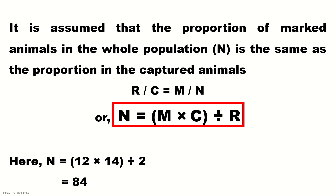It is assumed that the proportion of marked animals in the whole population, denoted by N, is the same as the proportion in the captured animals. N is what we will find out. N is equivalent to the product of M and C divided by R. According to this example, N is equal to 12 multiplied by 14 divided by 2, which gives you 84.